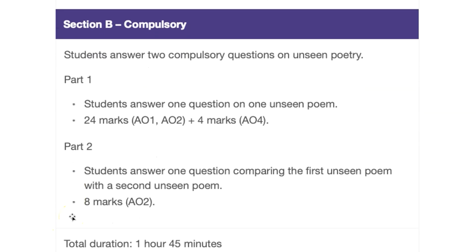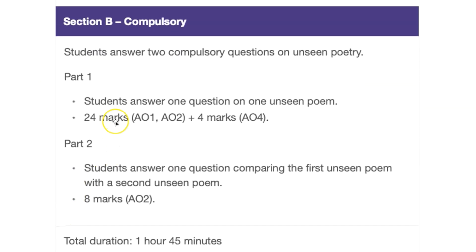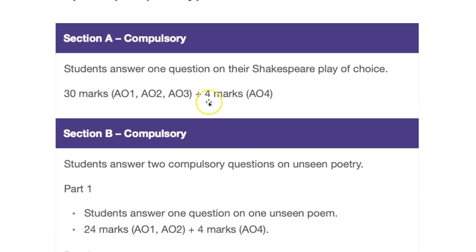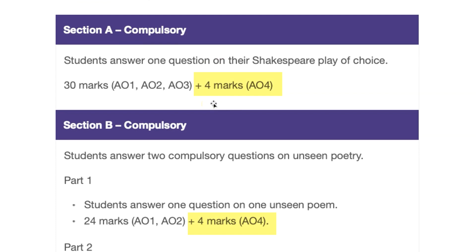Then Section B, which is also compulsory, will be the unseen poem. Notice that the marks for spelling, punctuation and grammar are now with that poetry question and with the Shakespeare question. So that's the exam paper where you really need to spend a little bit of time making sure you're accurate, because that's going to give you eight extra marks on the paper — and that's quite a big deal.